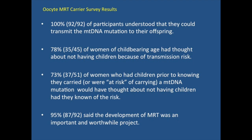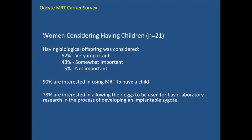100% of participants understood that they could transmit the mutation to their offspring. 78% of women of childbearing age had thought about not having children because of transmission risk. 73% of women who had children prior to knowing they carried a mitochondrial mutation would have thought about not having children had they known of the risk. And 98% said the development of MRT was an important and worthwhile project. Of the 21 women considering having children, 52% said it was very important that their children be their own biological offspring, 43% said somewhat important, and 5% said not important. 90% said they would like to use MRT to have a child, and 78% said they're interested in allowing their eggs to be used for basic laboratory research to develop the technique.